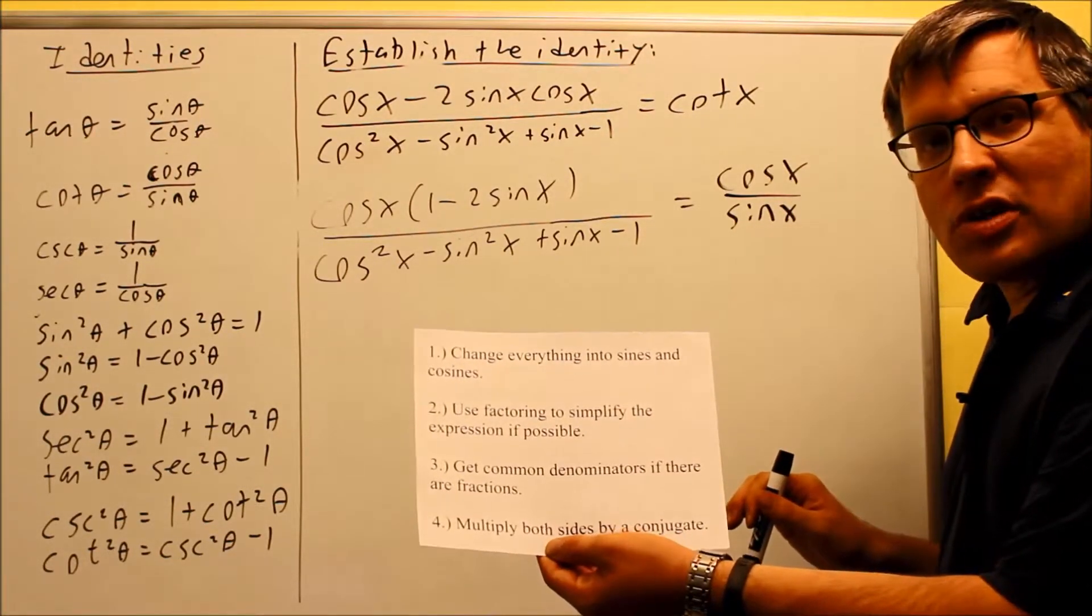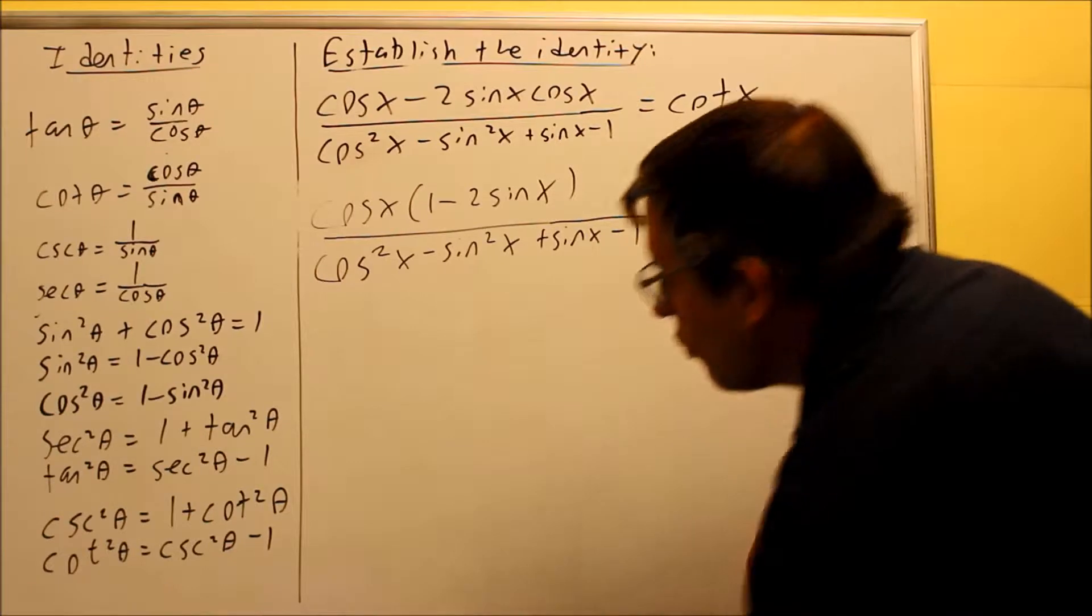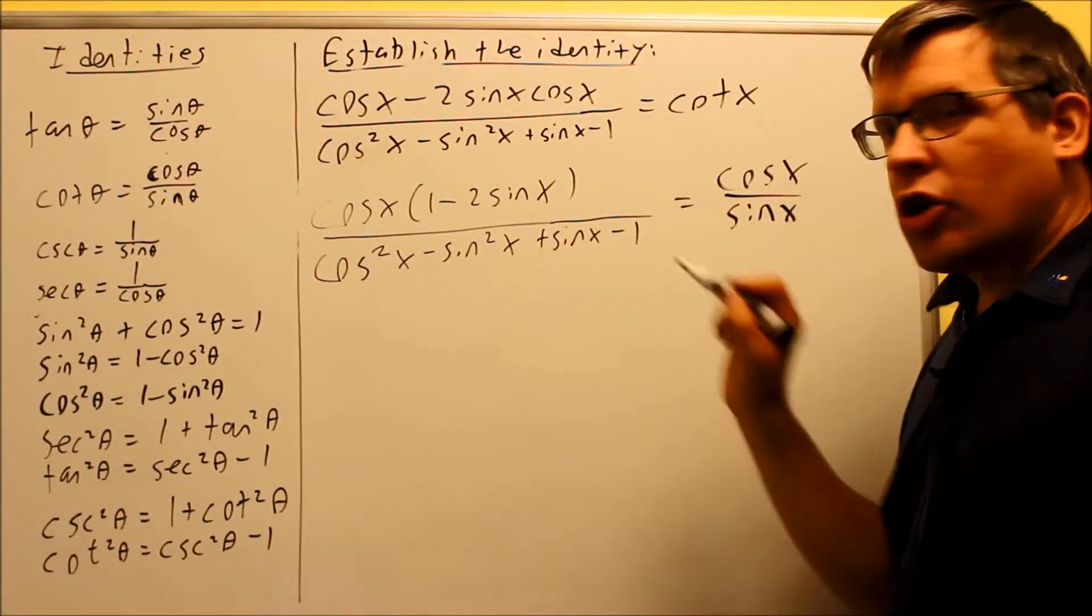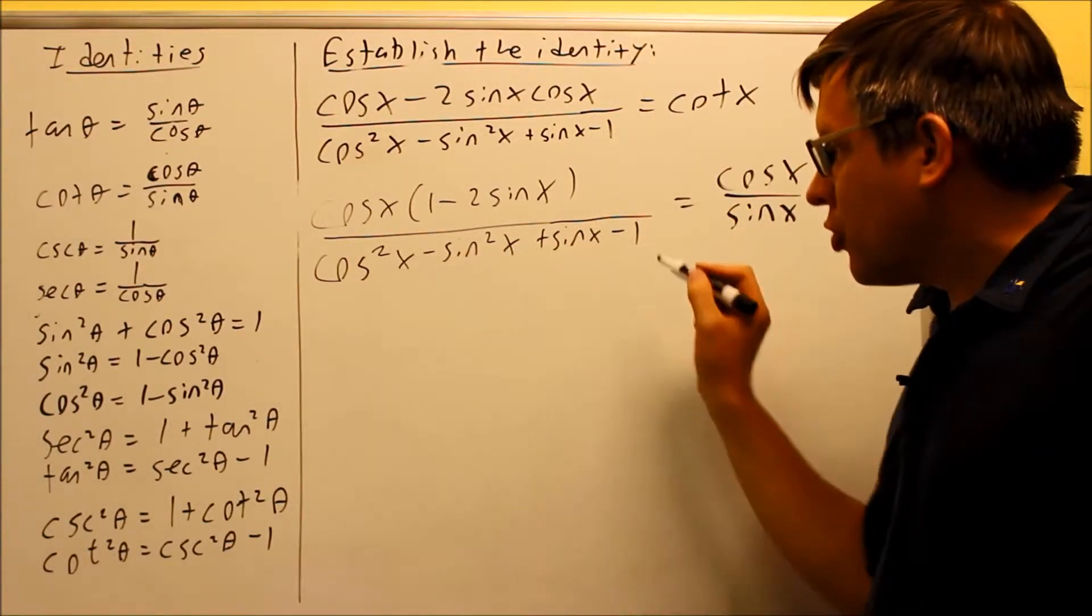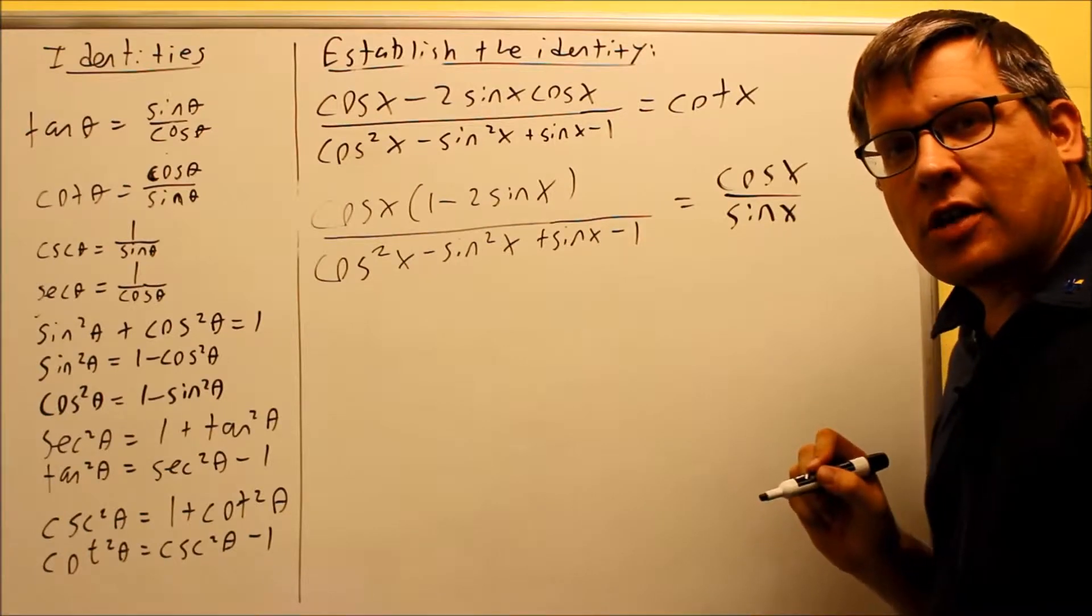Then step four, multiply both sides by a conjugate. Well, that's really only when you have two terms on the bottom like that, and we have four terms, so we can't really multiply by a conjugate either.